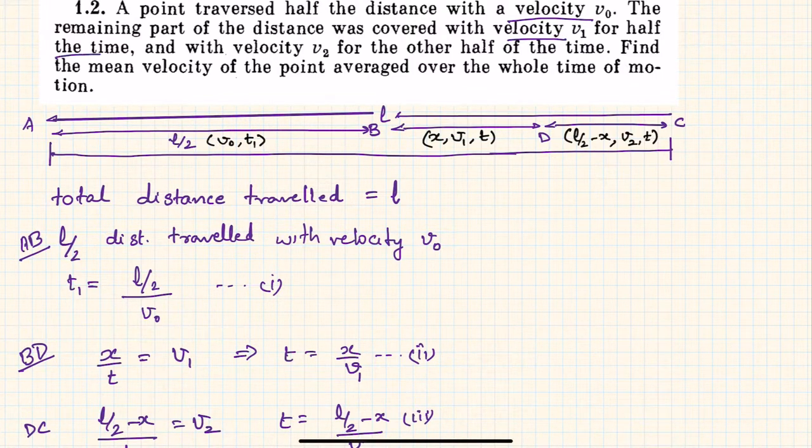in the remaining journey, half the time the velocity was v1 and v2 for the other half of the time. You have to find the mean velocity or the average velocity of the point over the whole time of motion.